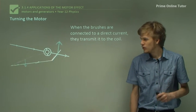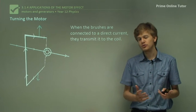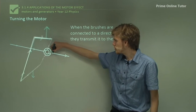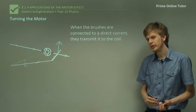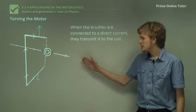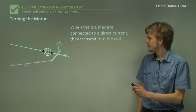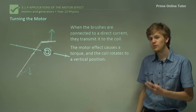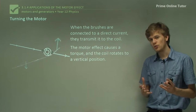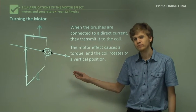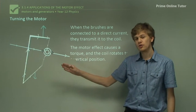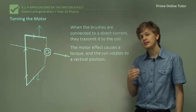So here we have an animation of what happens when we run a direct current across an armature using a set of brushes. The brushes will be connecting the external current to the split-ring commutator at this point and at this point. We can see that the direct current is transmitted into the coil. The motor effect causes an upward force to act on the right side of the coil and a downward force to act on the left side of the coil. And this pulls the coil into a vertical position. The torque from the left side and the right side of the coil is identical and in the same direction.